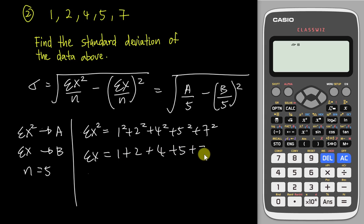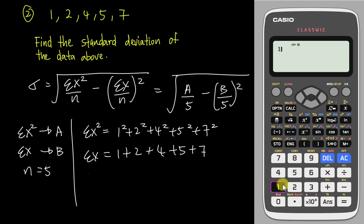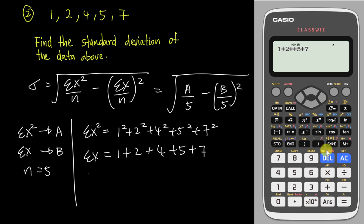Let's calculate Σx² first: 1² + 2² + 4² + 5² + 7². I type enter — it's 95. I can straight away do store to A. Then for Σx: 1 + 2 + 4 + 5 + 7. I type enter and straight away store to B.